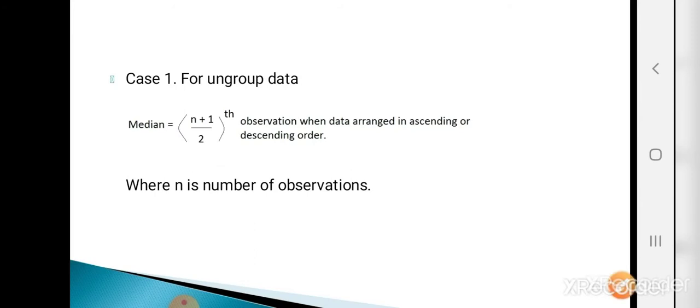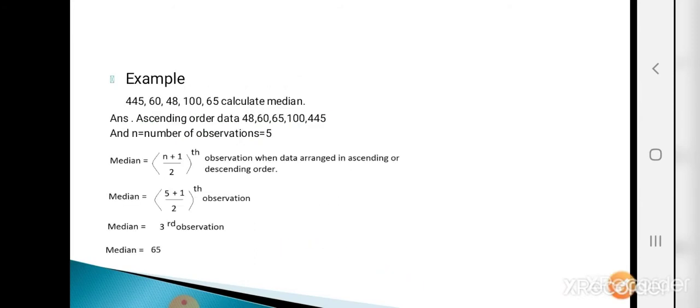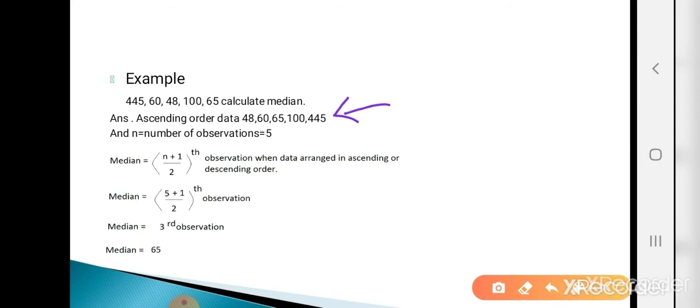Example: data is 44, 5, 60, 48, 100, 65. Calculate the median. For calculating the median we need to arrange the data in ascending or descending order. The ascending order data is 48, 60, 65, 100, and 445. Here the value of n, the number of observations, is 5.